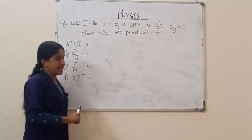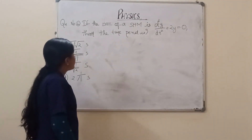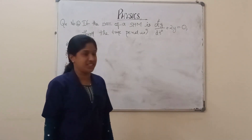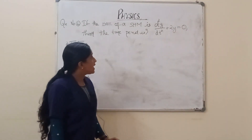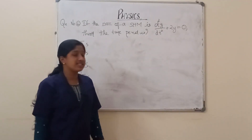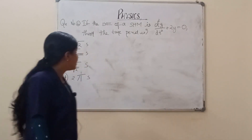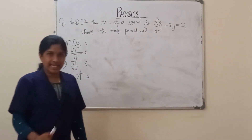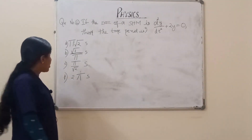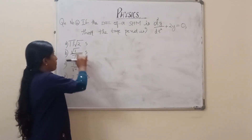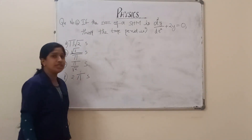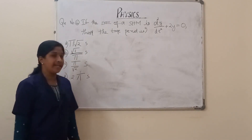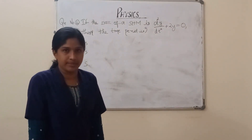Second question: If the differential equation of a simple harmonic oscillation is d²y/dt² + 2y = 0, then the time period is? The given options are: π√2 seconds, √2/π seconds, π/√2 seconds, and 2π seconds.